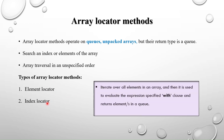In both methods, the procedure is: first it will iterate over all elements in the array, then it evaluates the expression specified with the 'with' clause, and it returns the elements into the queue. For some methods, the with clause is not mandatory — it is optional. We will see which methods require the with clause and which do not.